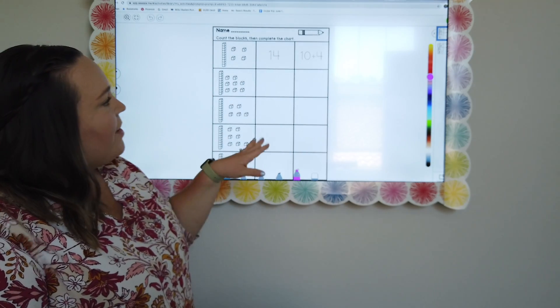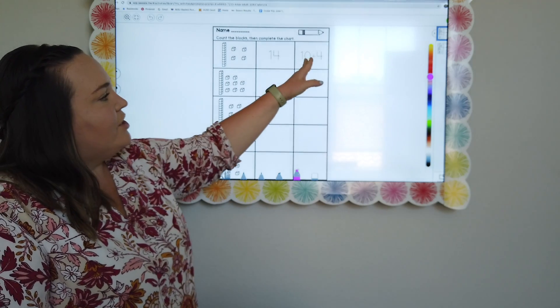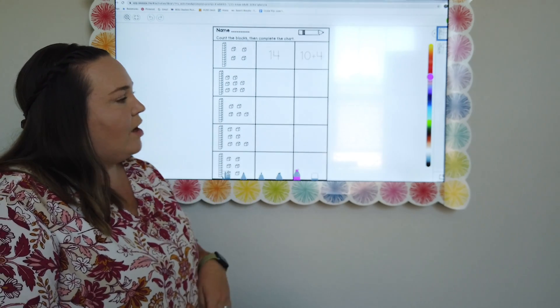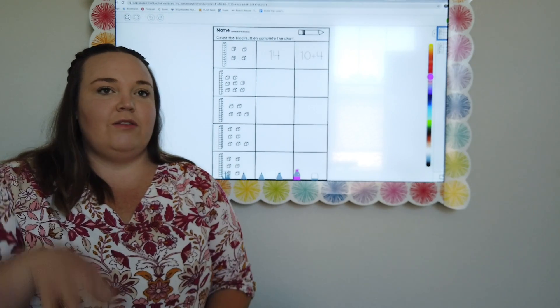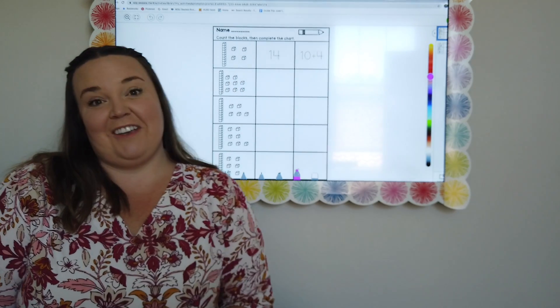This shows 10 and 4 together, 14, and this shows again the tens column and then the ones column. So just making sure that you know that groups of 10, groups of 1, place value.